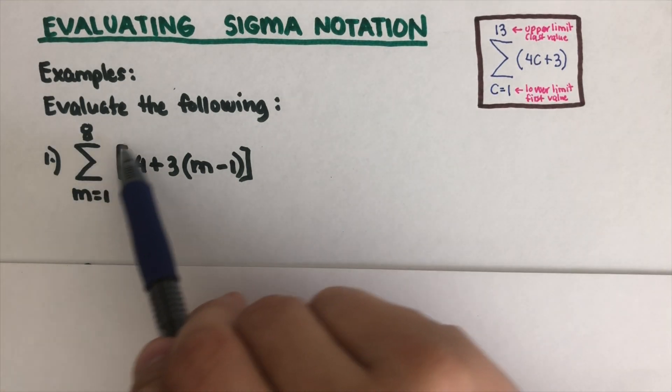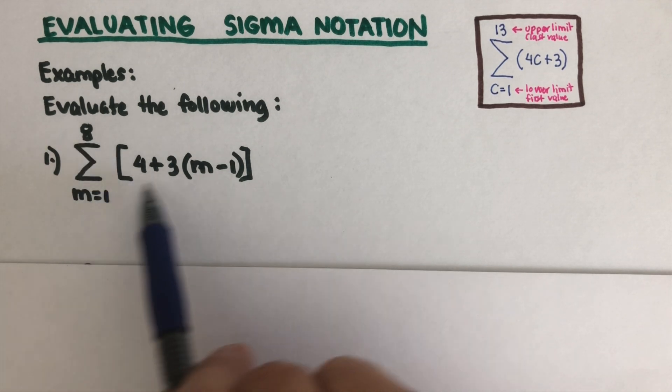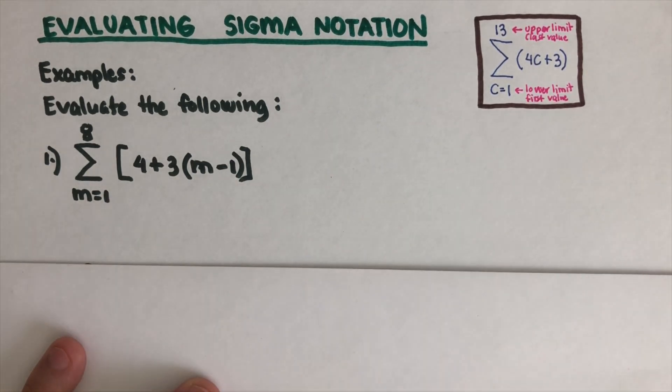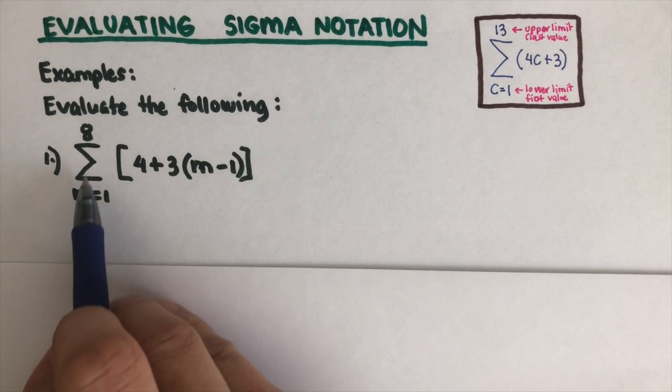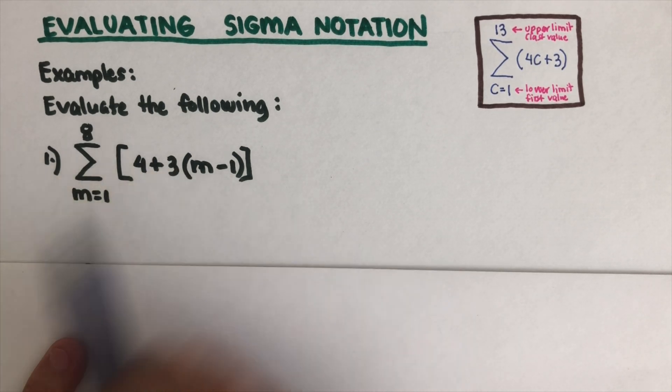We are supposed to evaluate this Sigma notation right here. This is the first value, this is the last value or upper limit, and this is the equation that we have. The purpose of the Sigma is to find the sum. We have to add all the numbers that are in based on this equation.